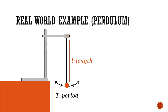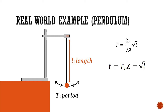Using the equation t equals 2π times the square root of l over g, we can take out the square root of l and transform this into a linear law graph, such that big Y is t and big X is the square root of l. The gradient of this would be 2π over the square root of g, and the big Y intercept will be 0.